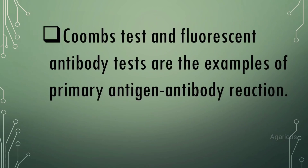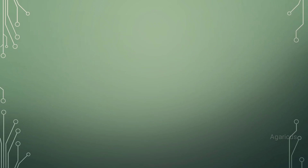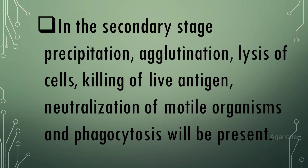The HOMES test and fluorescent antibody tests are examples of primary antigen-antibody reactions. In the secondary stage, precipitation, agglutination, lysis of cells, killing of live antigen, neutralization of motile organisms, and phagocytosis will be present.